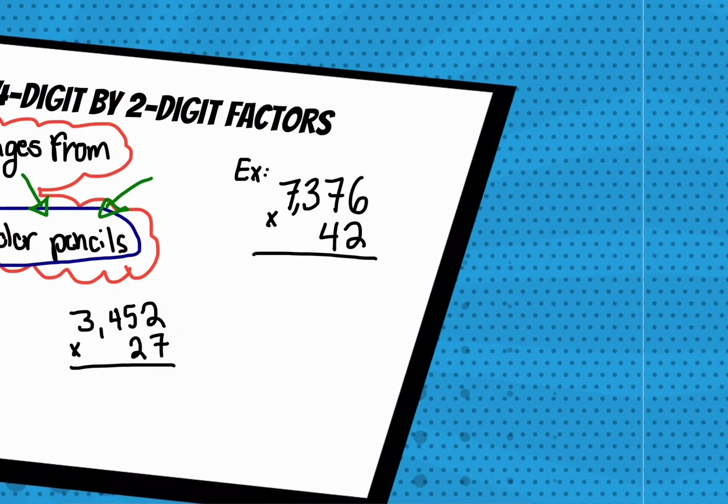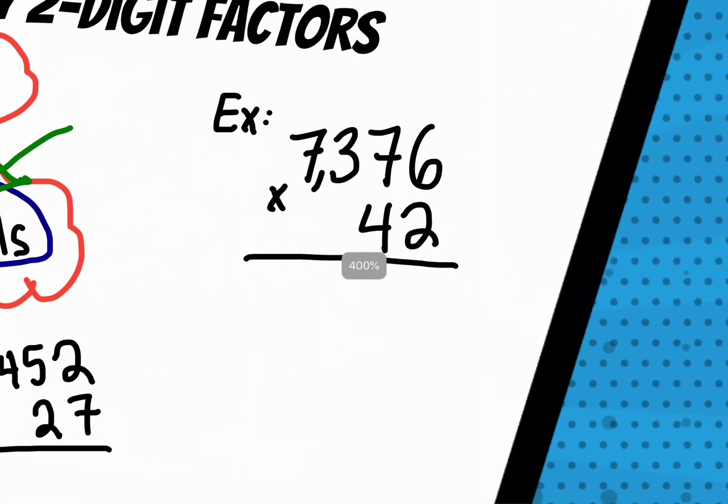So think about what this problem over here is asking us. You have 7,376 times 42. So what you're really doing is you're multiplying it by two and putting your answer here. And then you're multiplying it by 40 and putting your answer there and then adding them together. Like your partial products and putting them together.